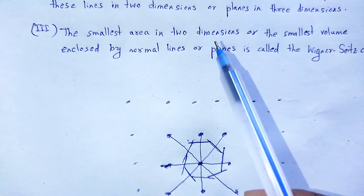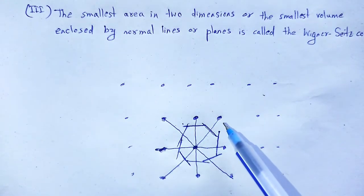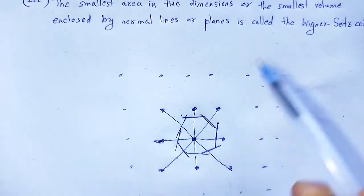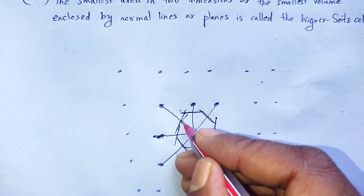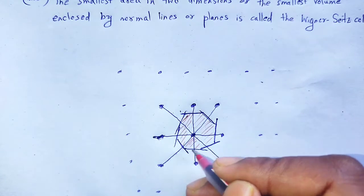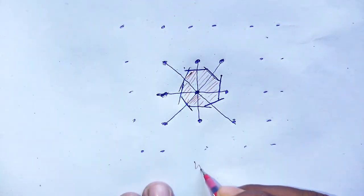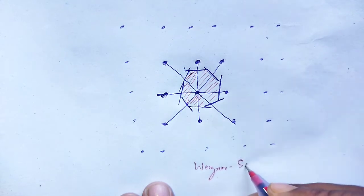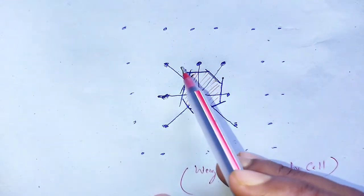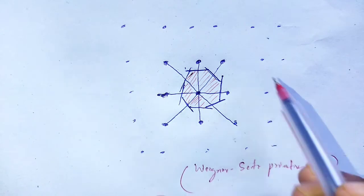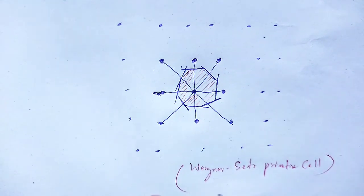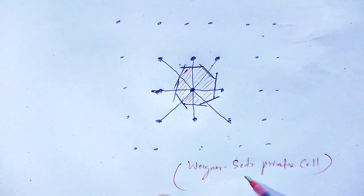Finally, the smallest area in two dimensions — or the smallest volume in three dimensions — enclosed by those perpendicular bisector lines or planes is called the Wigner-Seitz primitive cell. Within those boundary lines, that area in two dimensions or volume in three dimensions is known as the Wigner-Seitz primitive cell.